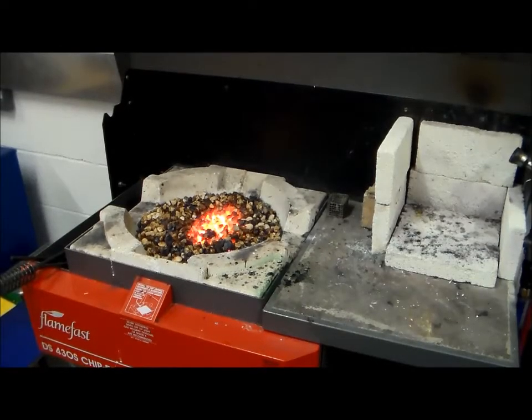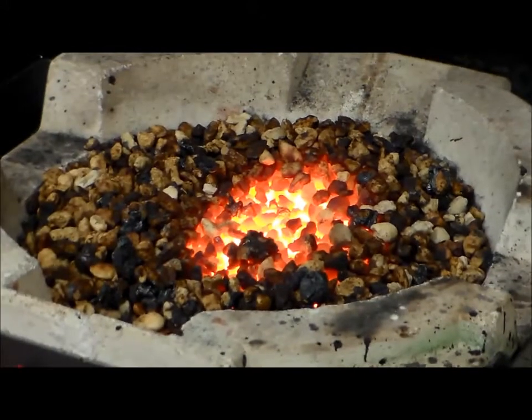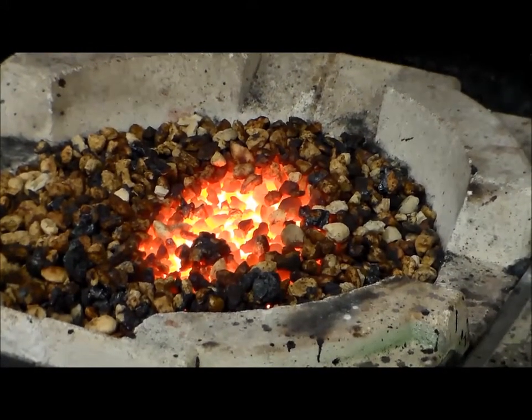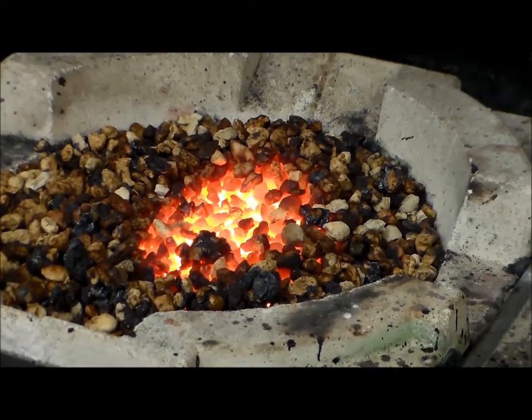This is the gas forge. It uses a gas and air mix to heat metal to a very high temperature. We're going to use this to heat the metal and form it into the G shape for the G clamp.